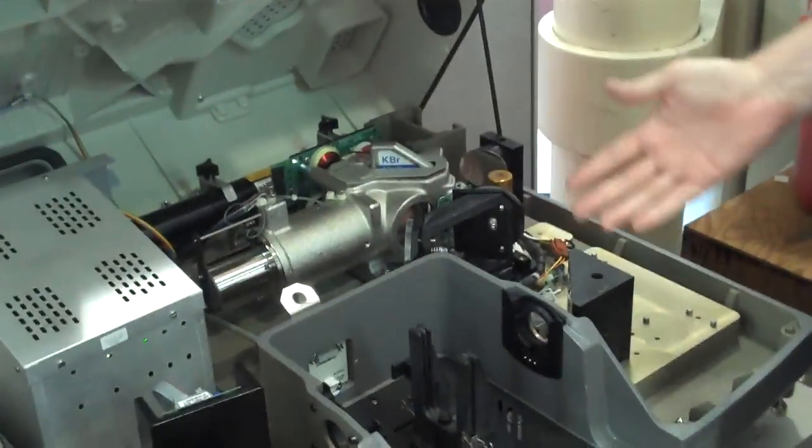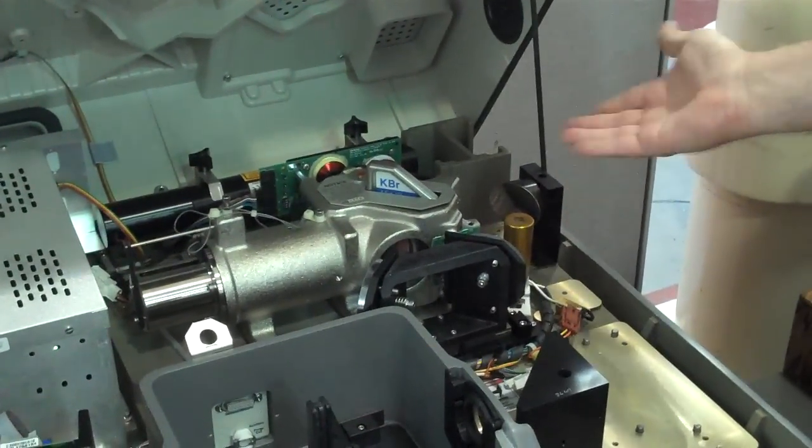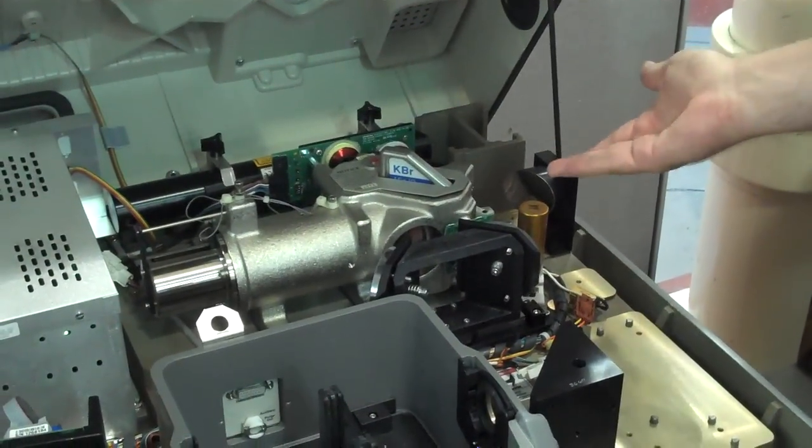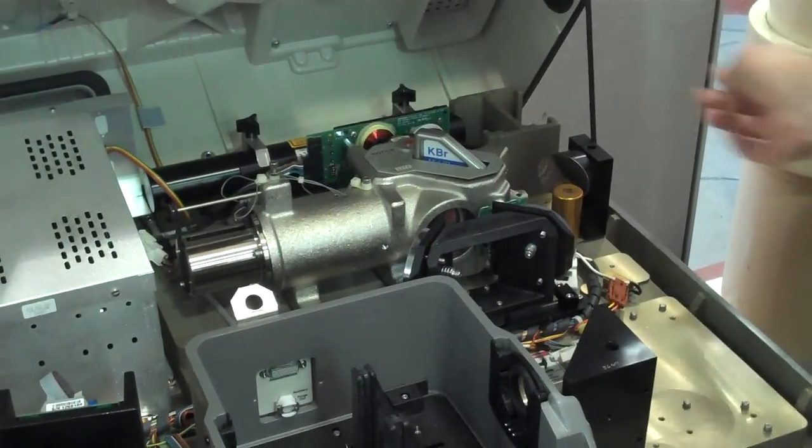If you look here, the basics of the spectrometer is really fairly simple. There's an infrared source, or in our case, we usually will put a synchrotron in on the side, but that's just a fancy light source that has much higher brightness.